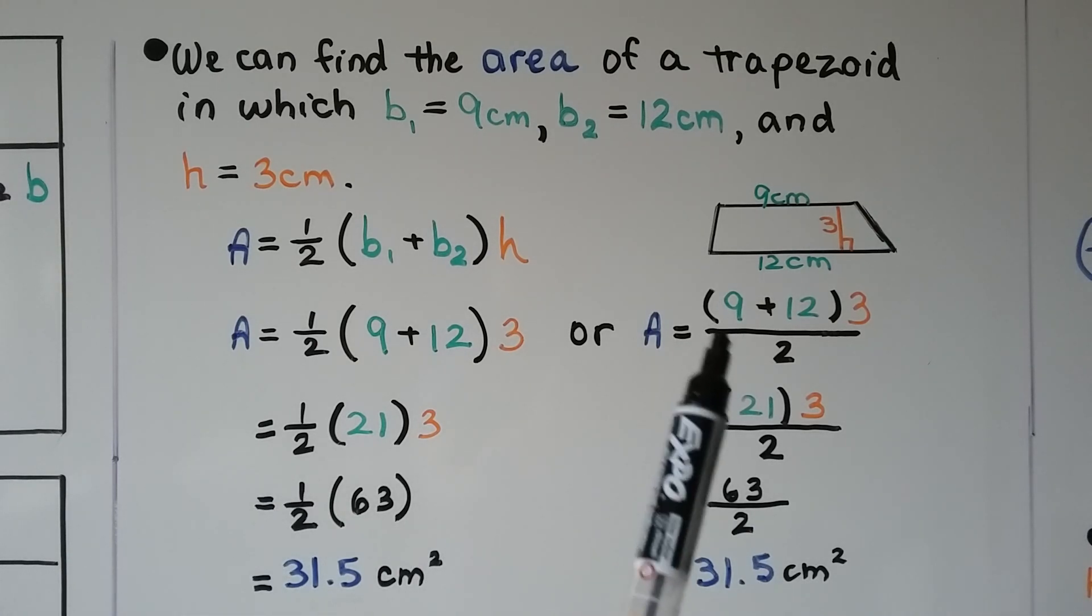And if we do it this way, if you don't like dealing with fractions, we do the 9 plus 12, which is 21, multiply it by the 3, which is 63, divided by 2. Same answer, 31.5 centimeters squared.